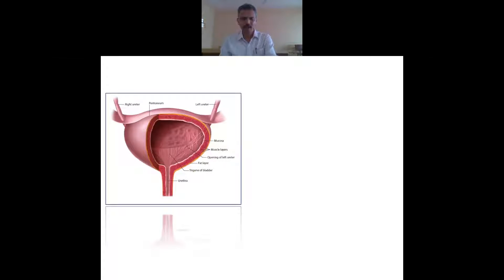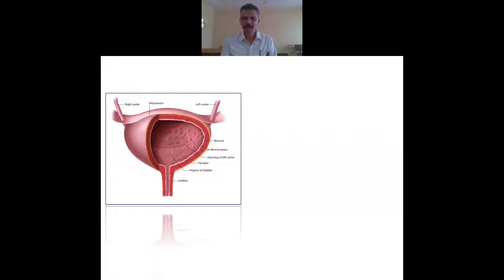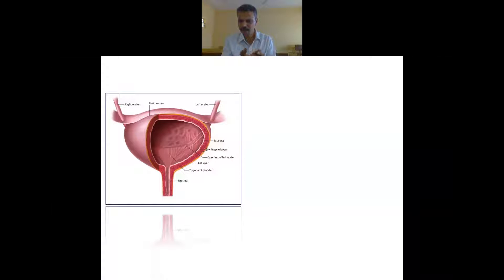Now we will talk of the urinary bladder. What could be the action of conium on the bladder? Go back to the sphere of action. Somebody says paralysis — paralytic weakness — beautiful. Conium is a remedy which mainly causes paralysis. So what it does physiologically is it affects the sphincters, and the sphincters go into paralysis. When the sphincter muscles go into paralysis, you either have difficulty in voiding urine.